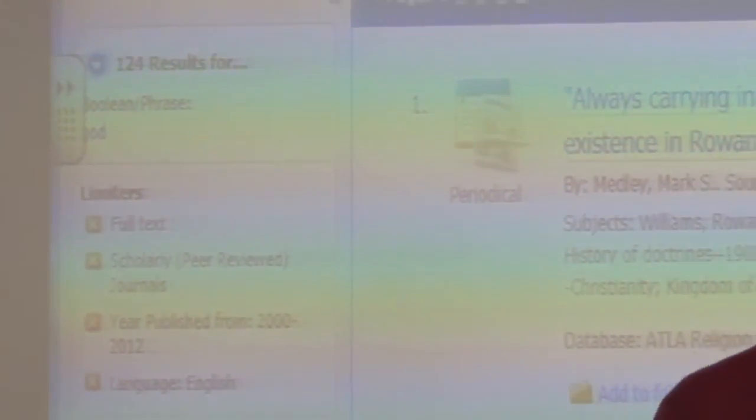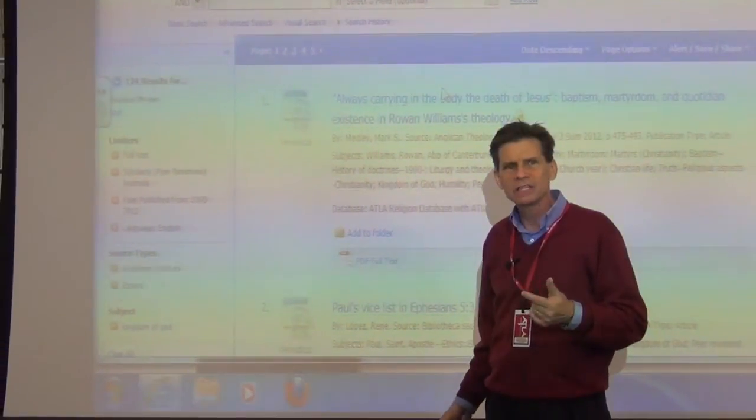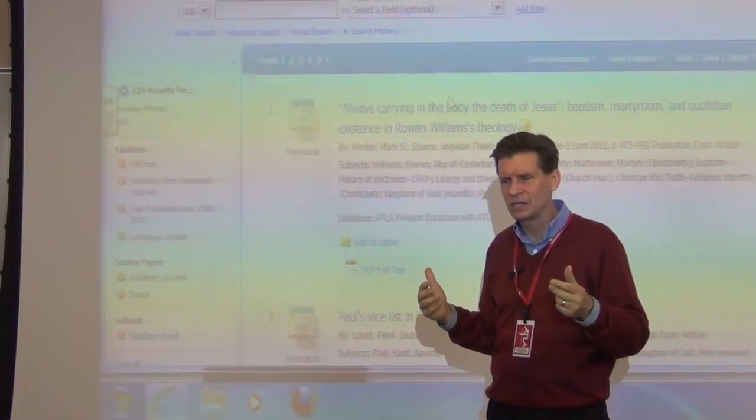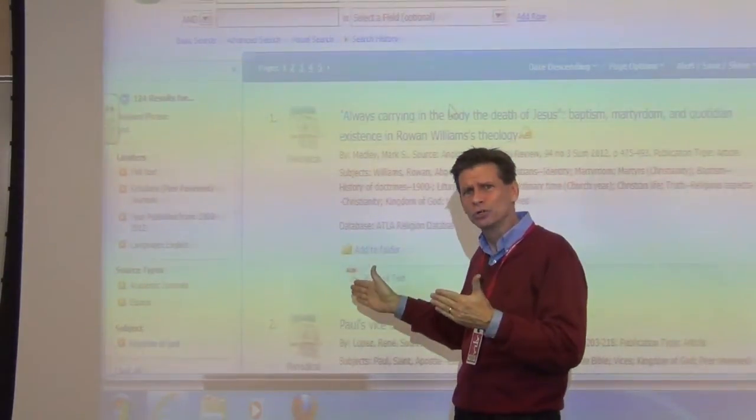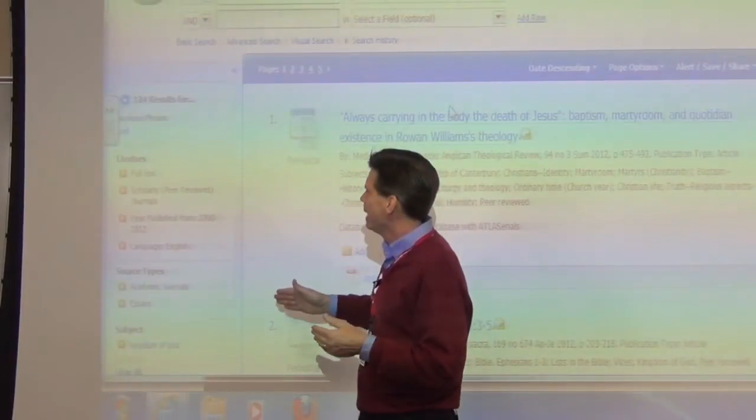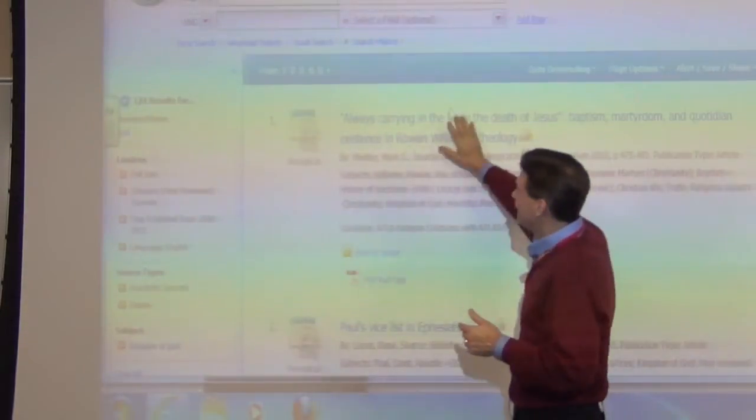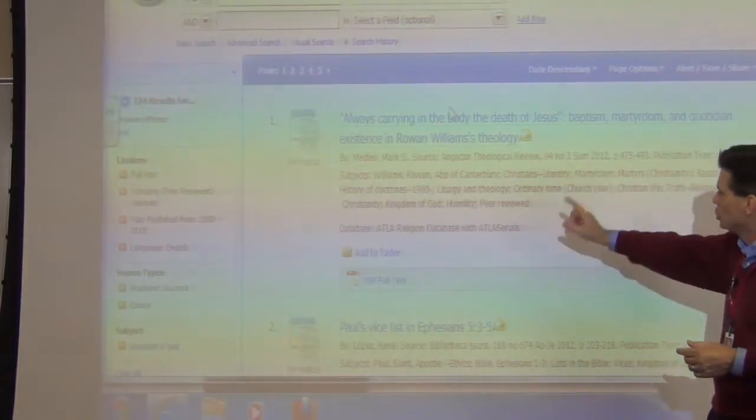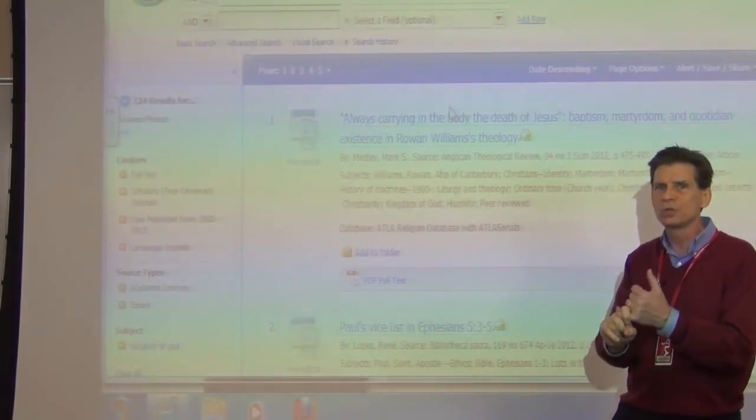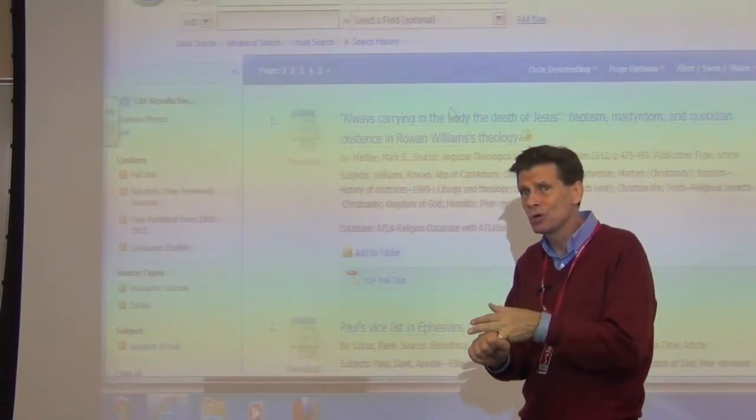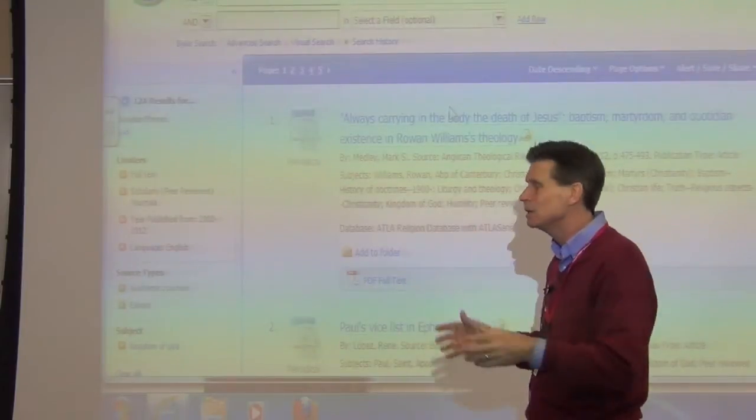We lowered it by over 67,000 results. That brings to mind the slogan: work smarter, not harder. Let the computer do as much work as possible. In just five or seven minutes, we've got it down to 124 results. Now we have just full text options, scholarly reviewed articles between 2000 and 2012, articles dealing with kingdom of God, just articles and essays. That's exactly where we want to be.